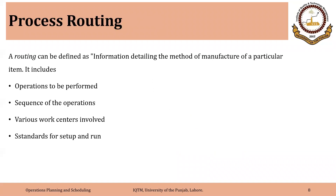Process routing is the second element of a product structure, other than bill of material. A routing can be defined as information detailing the method of manufacture of a particular item. A bill of material may show the sequence of steps, but it does not show the method of manufacture — these are two different things. The method of manufacture means the steps required to make a product, which machines will be used at every step, and the time required at every machine. Process routing shows the operations to be performed, sequence of operations, work centers involved, and standards for setup and run time.